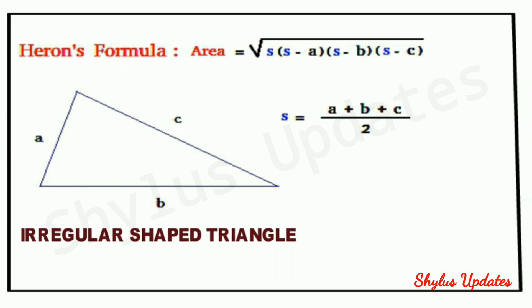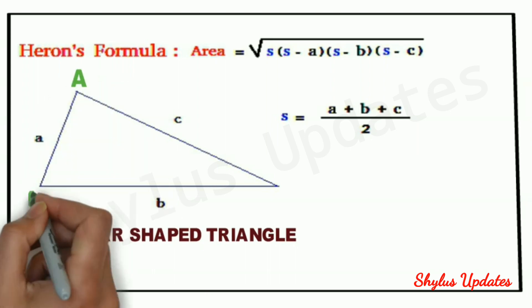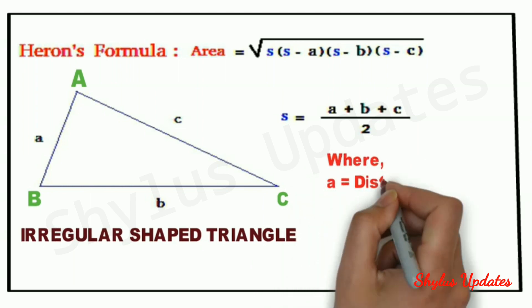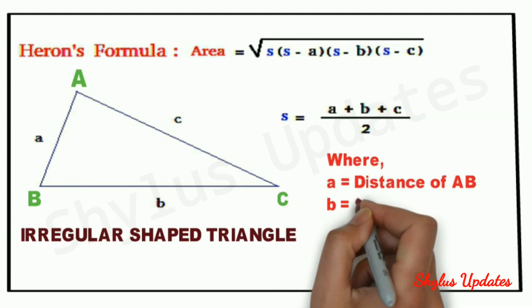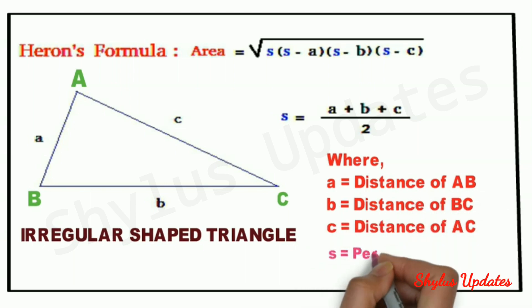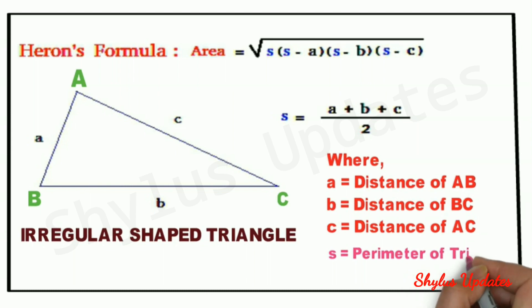This is an irregular shaped triangle where a equals distance of AB, b equals distance of BC, and c equals distance of AC. S is the semi-perimeter of the triangle.